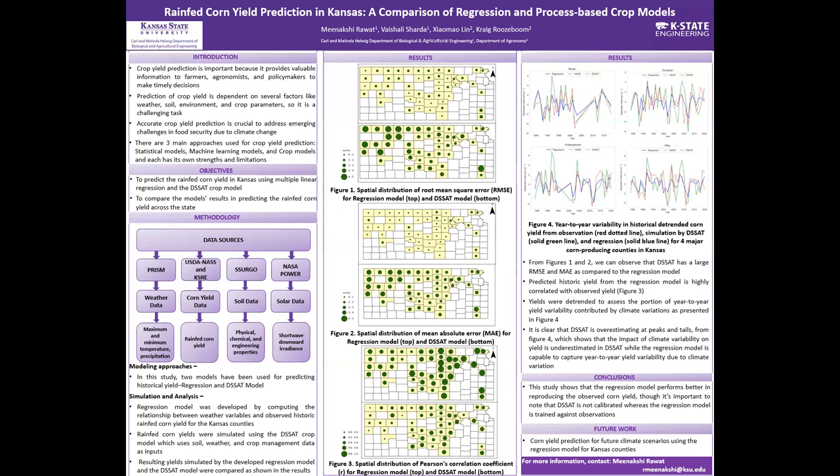Figures 1, 2, and 3 show the spatial distribution of evaluation metrics for the regression model and DSSAT model for 49 selected counties in Kansas. Figure 1 shows the root-mean-square error for regression ranges from 0.74 to 2.11 tonnes per hectare, whereas for DSSAT it ranges from 2.02 to 4.71 tonnes per hectare. Figure 2 shows the mean absolute error for regression is half as compared to DSSAT, ranging from 0.58 to 1.68 for regression and 1.49 to 4.03 for DSSAT.